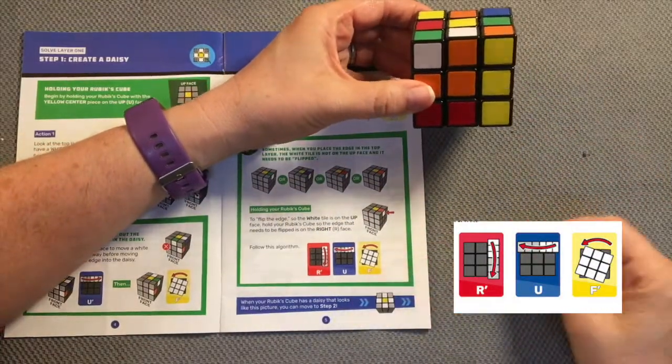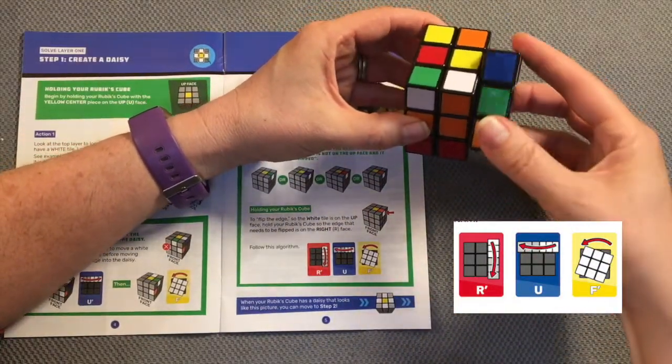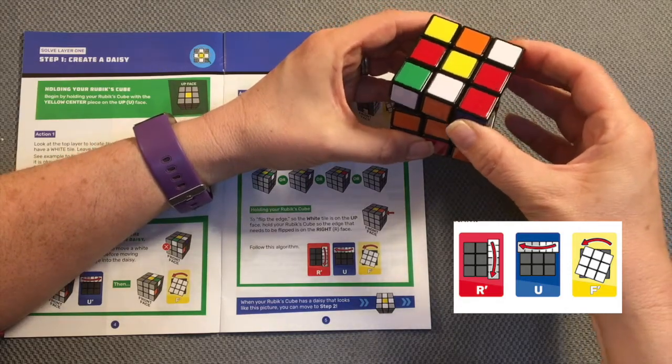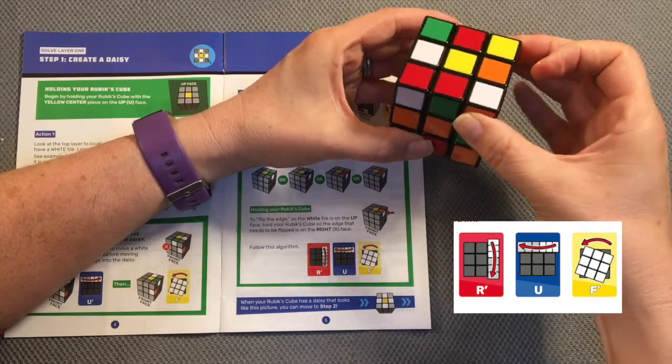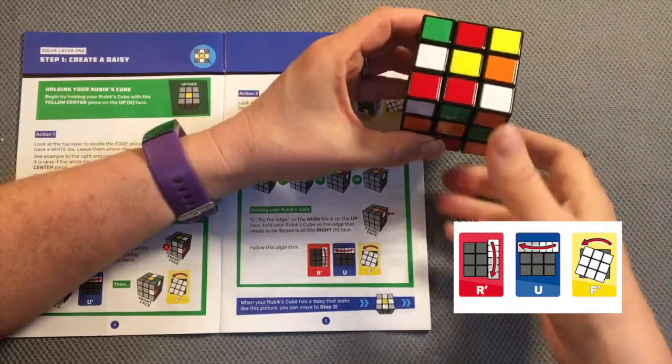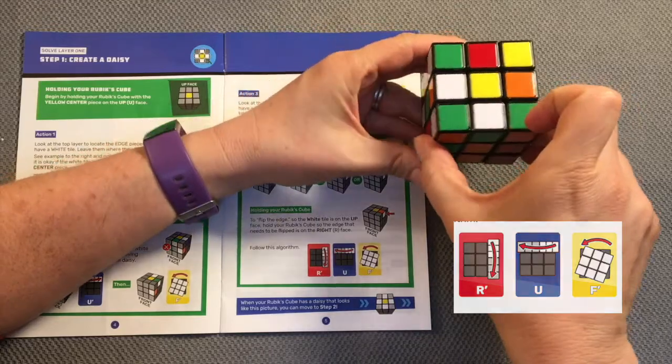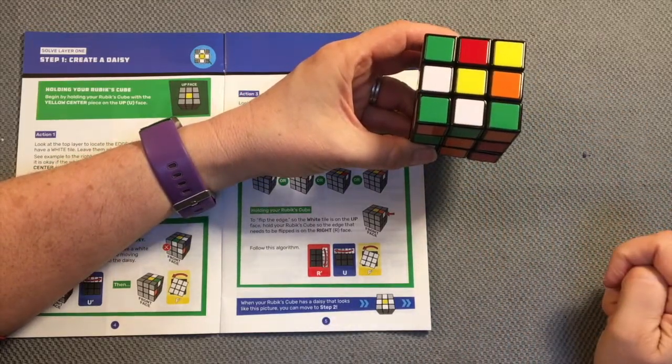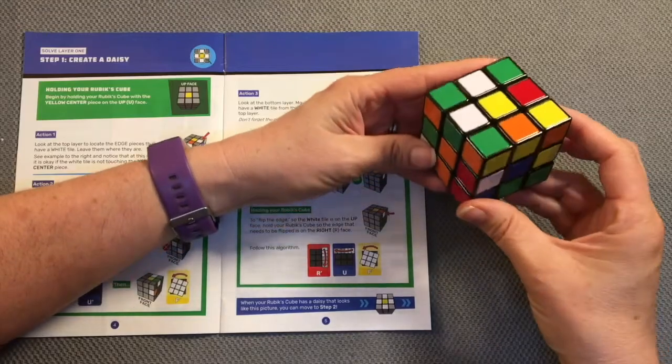Now I will follow this algorithm: right towards me, up to the left, so I'm moving that one out of the way that has already been set, and front to the left. Now I have two of my white tiles on my way to the daisy.